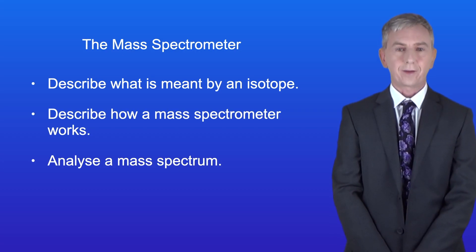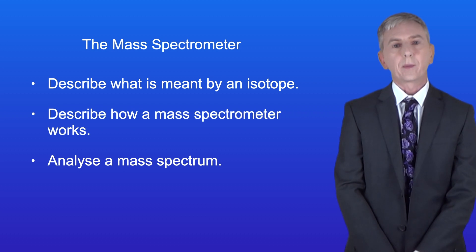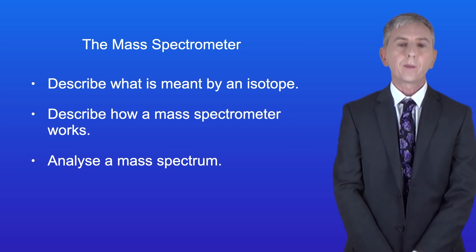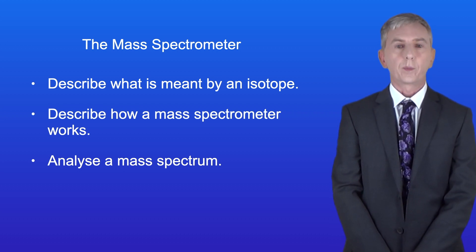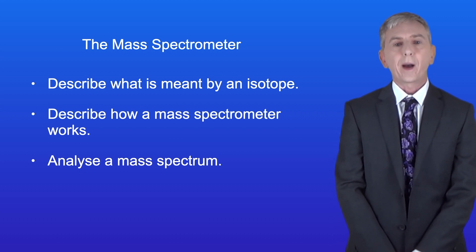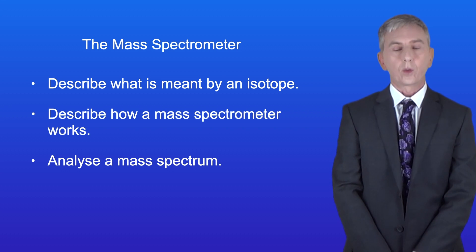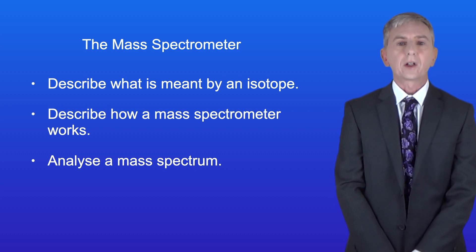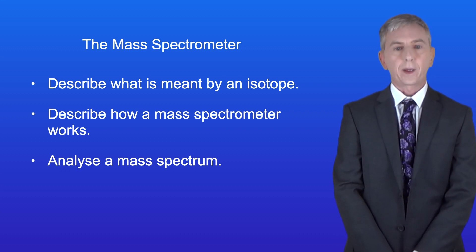Hi and welcome back to Free Science Lessons. By the end of this video you should be able to describe what's meant by an isotope. You should then be able to describe how a mass spectrometer works and finally you should be able to analyse a mass spectrum.